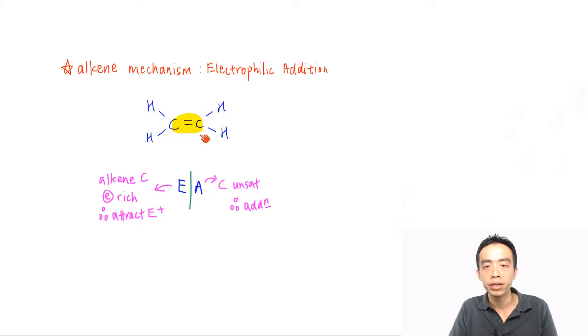Now when we look at the functional group alkene, we can deduce the mechanism that it undergoes. Because my alkene is electron-rich, between the two double bonds there are four electrons, it's considered as electron-rich, so therefore it reacts with a species which is electron-poor or electron-deficient.